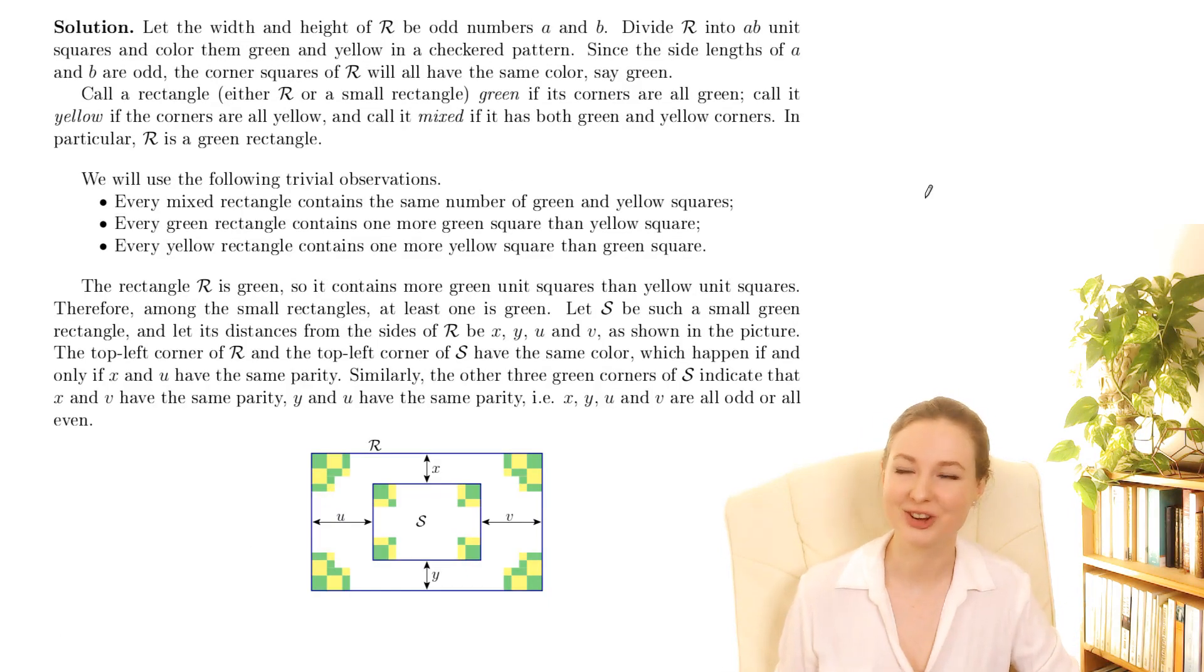Now to be honest I couldn't actually think of a good way to word that and explain why a rectangle with four black corners is going to satisfy the condition, but I read in the solution they explain it pretty well here. They're just using green instead of black and yellow instead of white.